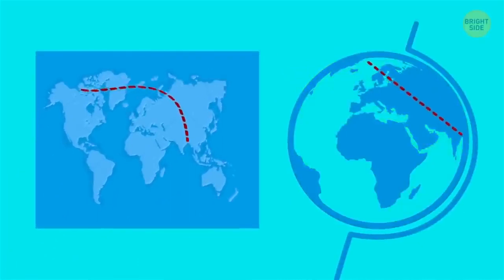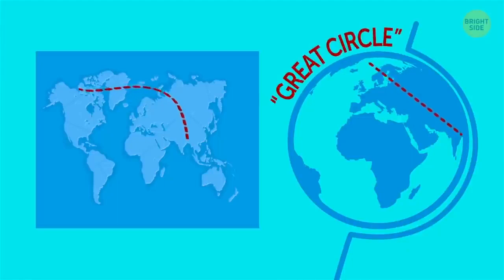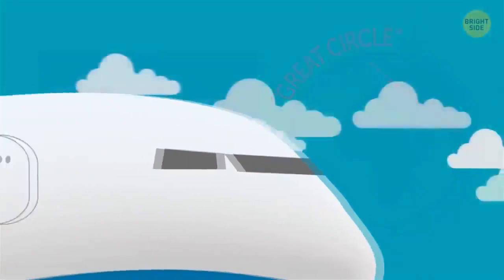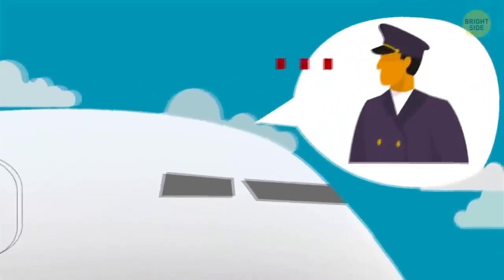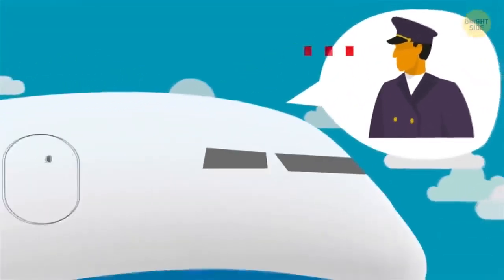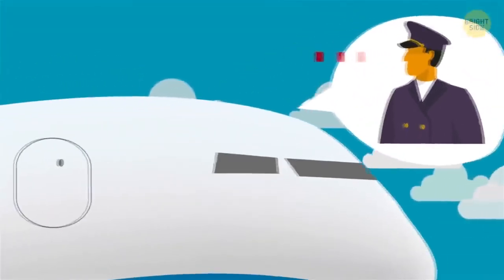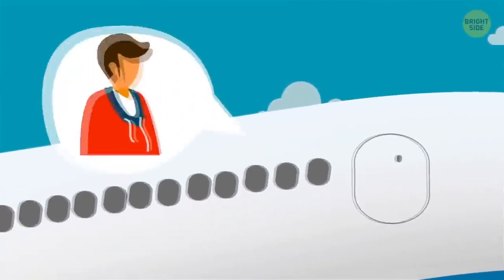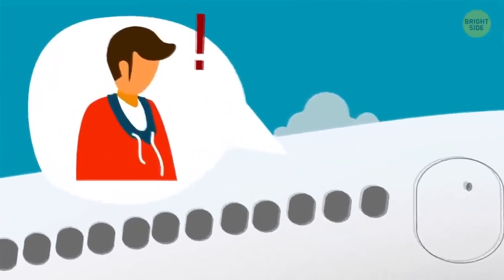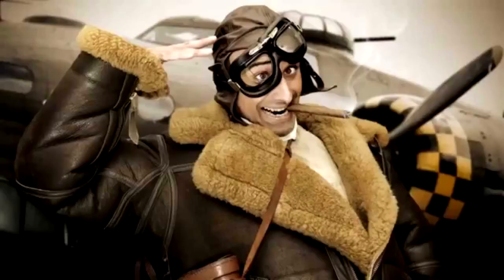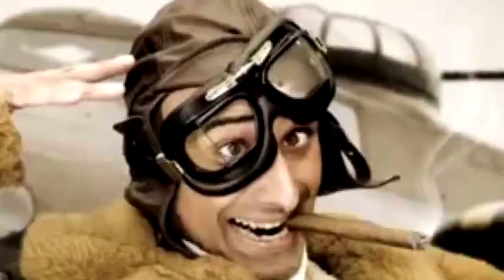These straight flight paths that look curved on a map are ironically known as great circle routes. They account for the curvature of the Earth. So what may look like an unnecessary detour over Canada's east coast when you're looking at a flat map is the shortest path when flying. Sorry captain — I don't get it.